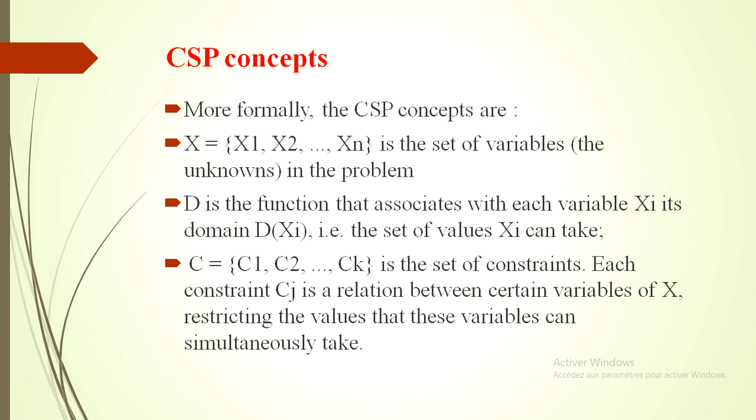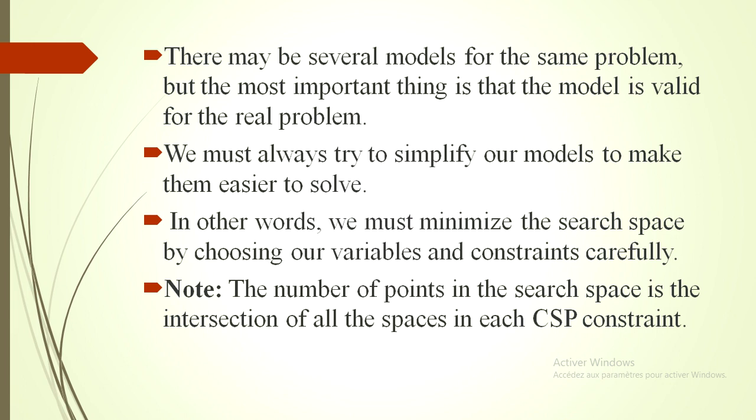We can see that the CSP model is a formal model. There are many or there may be several models for the same problem. But the most important thing is that the model is valid for the real problem. We must always try to simplify our model to make them easy to solve. In other words, we must minimize the search space by choosing our variables and constraints carefully. The number of points in the search space is the intersection of all the spaces in each CSP constraint.